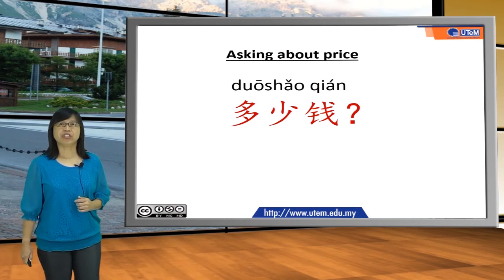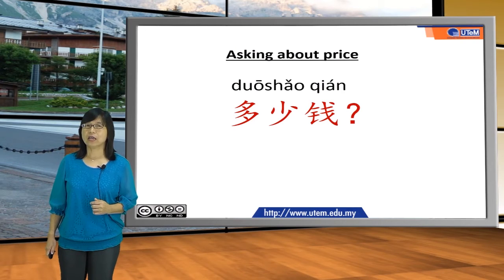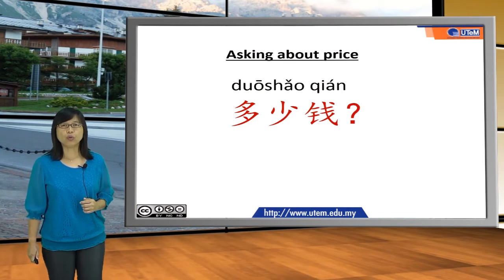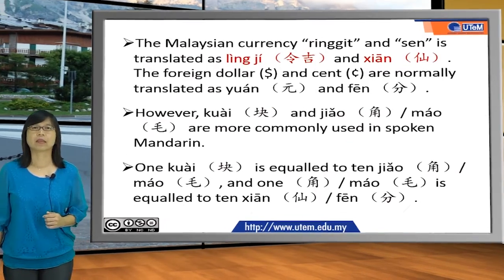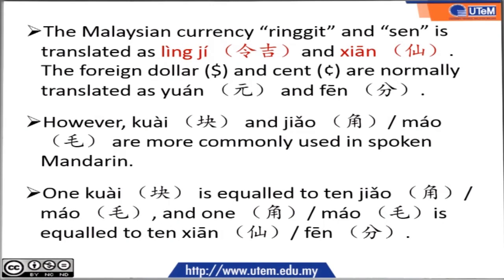Now we come to the conversation about asking price. The key phrase is 多少钱, which means 'how much?' Before we go to the conversation, let's learn about Malaysian currency. The Malaysian currency — ringgit and sen — is translated as 令吉 and 仙. The formal terms are 元 and 角 for dollar and ten-cent units, but 块 and 毛 are more commonly used in spoken Mandarin. One 块 equals ten 毛, and one 毛 equals ten cents.